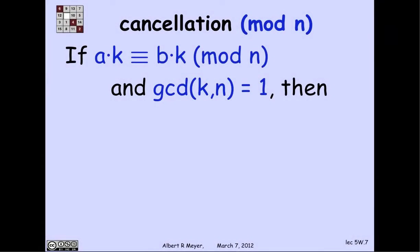Now, I can also cancel k if it's relatively prime to n. And the reason is that if I have a·k ≡ b·k (mod n) and the gcd of k and n is 1, then I have this k' that's an inverse of k.